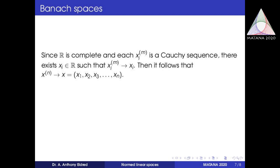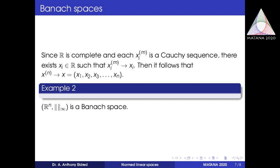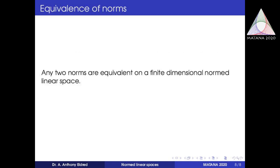Similarly, R^n with respect to the infinity norm is also a Banach space. Since the maximum of the modulus of each quantity is less than epsilon, each individual quantity is also less than epsilon, and the same technique applies. Furthermore, any two norms are equivalent in a finite-dimensional normed linear space — they generate the same topology. Since every finite-dimensional vector space is isomorphic to R^n and any two norms are equivalent in finite dimensions, there is not much more to study in finite-dimensional spaces. So we move on to infinite-dimensional Banach spaces or normed linear spaces.